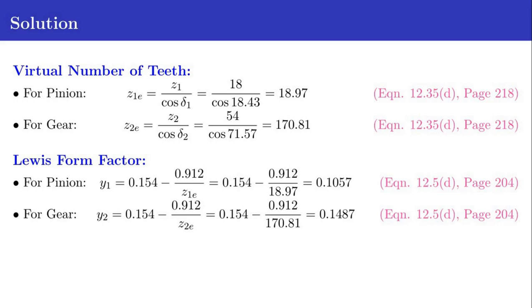Now we find out the virtual number of teeth for pinion and gear. For pinion Z1E equals Z1 divided by cos delta 1. Z1 is 18 and delta 1 is 18.43, so Z1E equals 18.97. For gear Z2E equals Z2 divided by cos delta 2. Z2 is 54 and delta 2 is 71.57, so Z2E equals 170.81. The equation for virtual number of teeth for bevel gears is given as equation 12.35D in page 218.